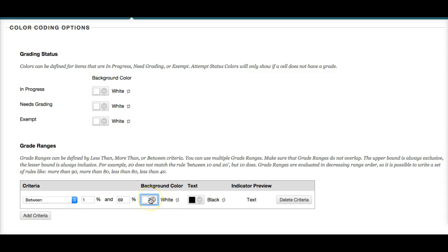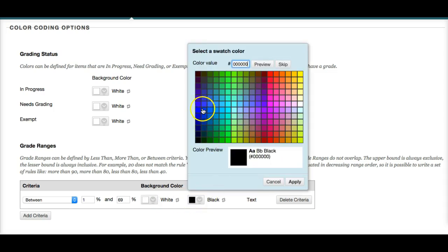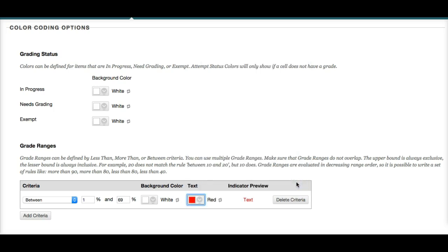You can say between 1% and 69%. I want to highlight students who are not passing. So background color. We can leave white, make it blue, students who are not passing, or make it red. So it's going to look like this, add criteria.